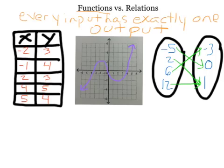The very important part is this 'exactly one.' No x value can have more than one y value paired with it. No input can have more than one output paired with it. It is okay for an output to have more than one input leading to it, but not for an input to have more than one output paired with it.